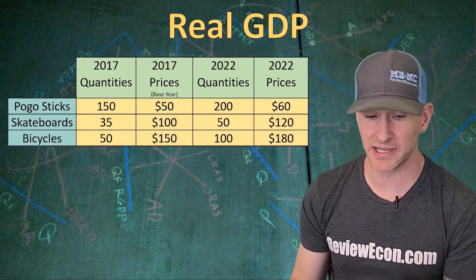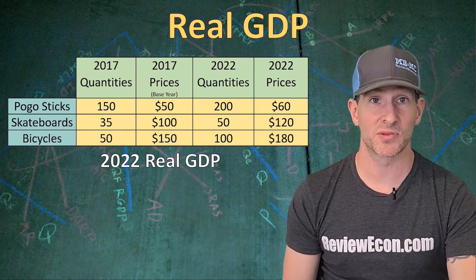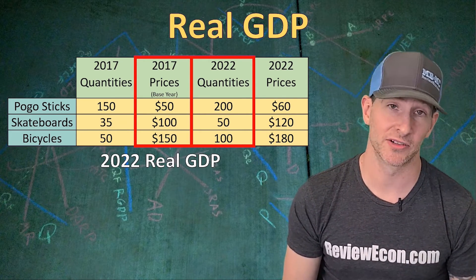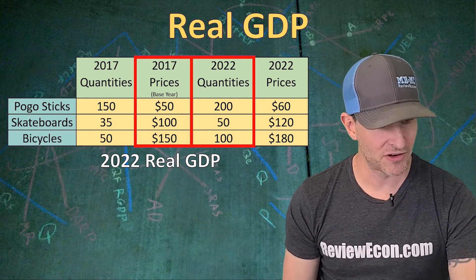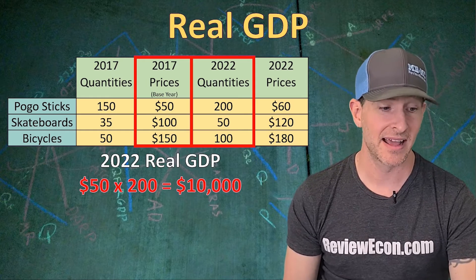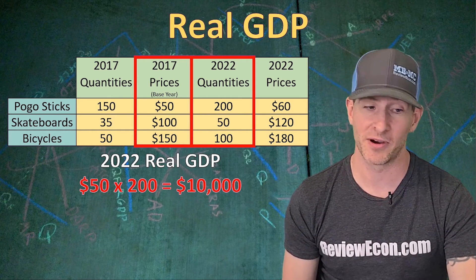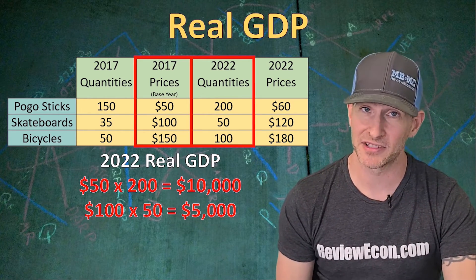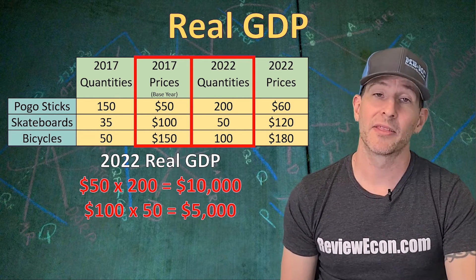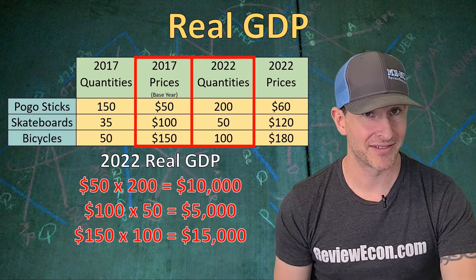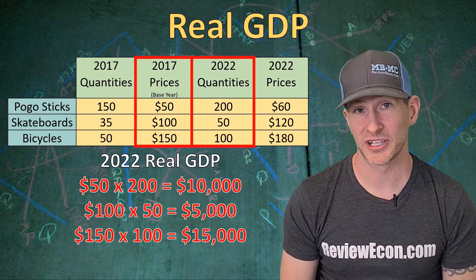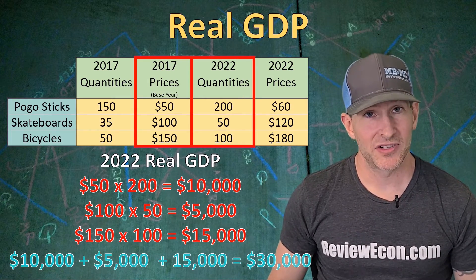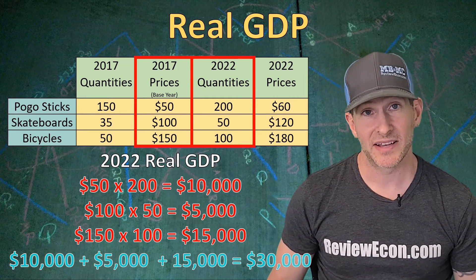Now let's calculate the real GDP for 2022. We use 2022's quantities but 2017's base year prices. So 200 pogo sticks at $50 gives $10,000. 50 skateboards at $100 gives $5,000. And 100 bicycles at $150 gives $15,000. Adding $10,000 plus $5,000 plus $15,000, we get 2022's real GDP of $30,000 with 2017 as the base year.